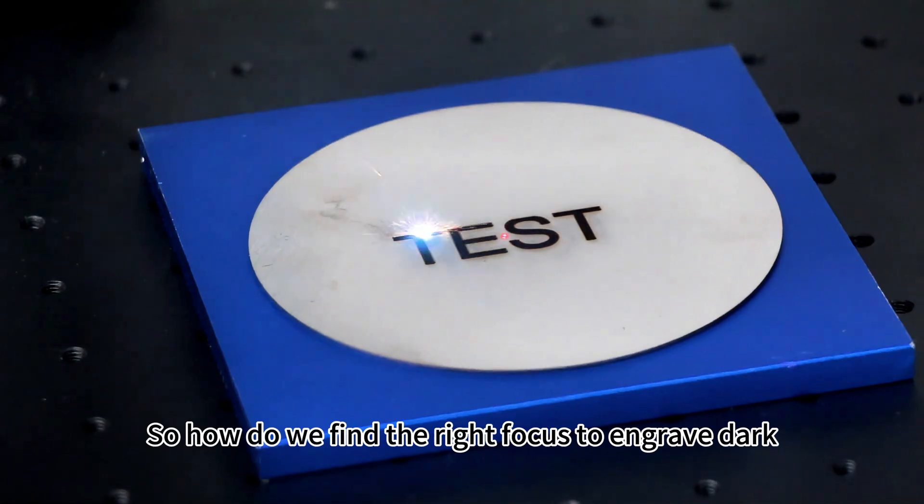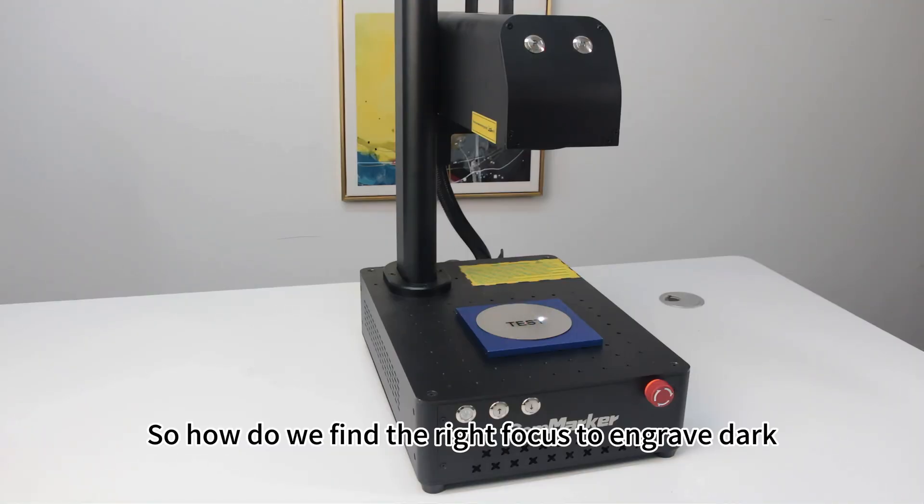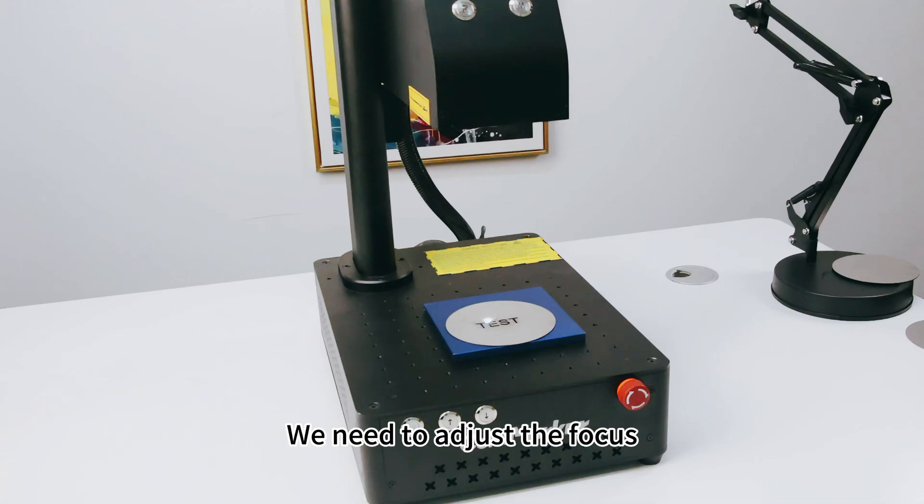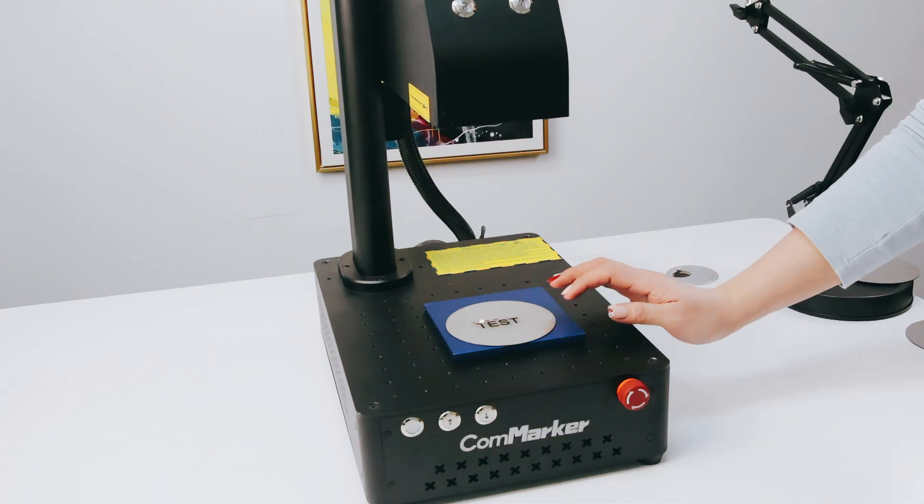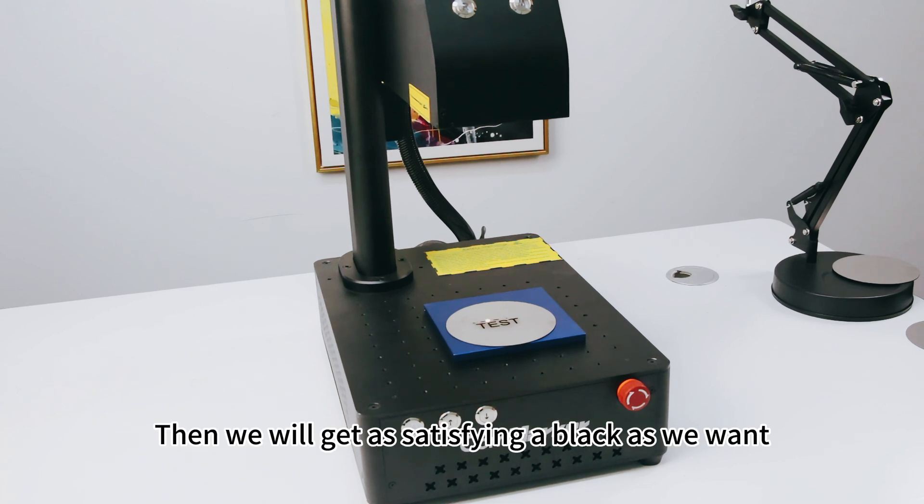So, how do we find the right focus to engrave dark? We need to adjust the focus until the laser's light turns as we get this. Then, we will get as satisfying black as we want.